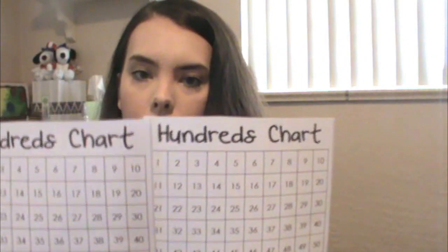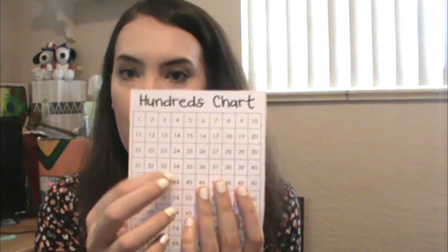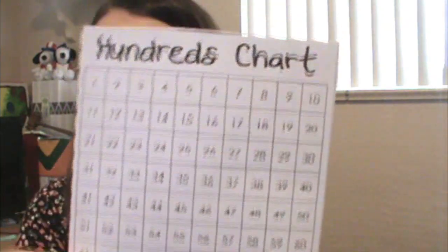So for this activity, students are going to need a hundreds chart that they will be using. They'll need to know the basic rules of Battleship because we're still going to follow the basic rules of it. They're also going to need some counters or something to mark their ship or number on their numbers chart and something to separate two students. So let's go ahead and get started!